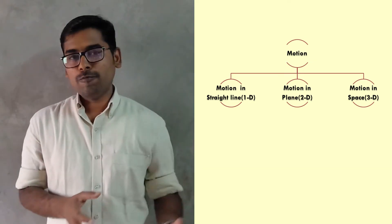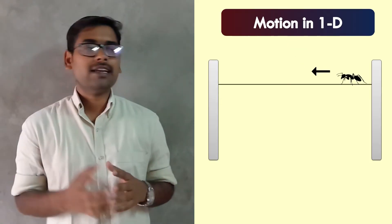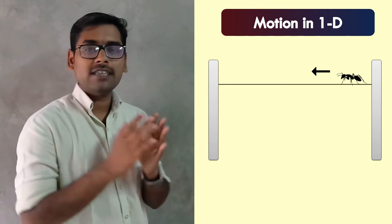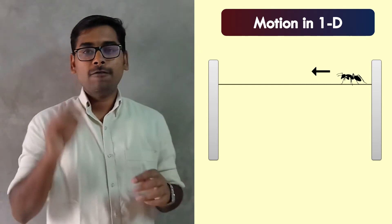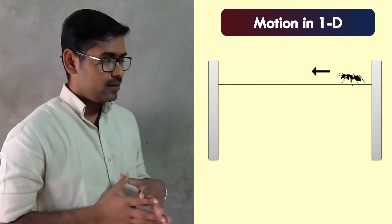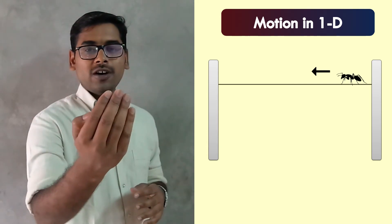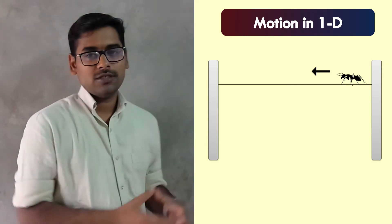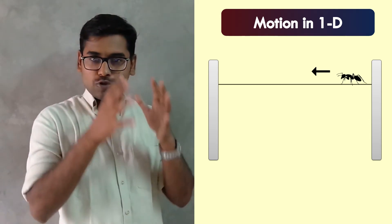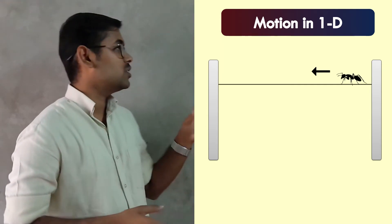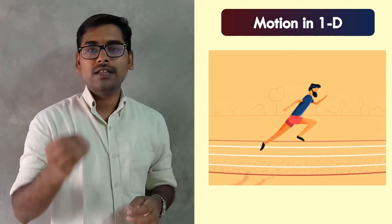Now let us understand each type of motion with an example. For motion in a straight line, consider a thin wire tied to two different walls with an ant moving from one end to another. The ant has only two options — move forward or come backwards. These kinds of motions, where the path is restricted to a straight line, are known as motion in a straight line. Another example is an athlete moving on a straight track.